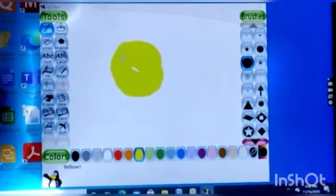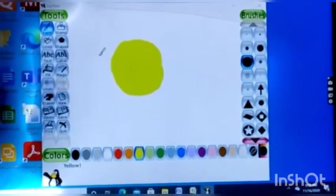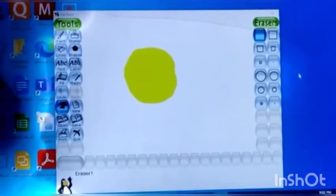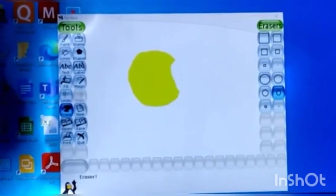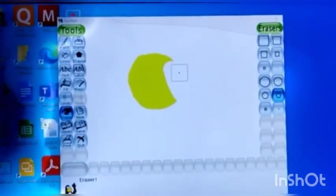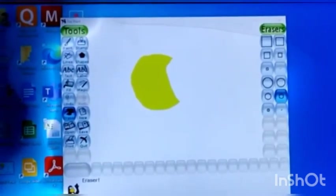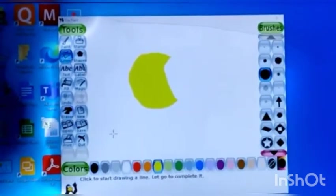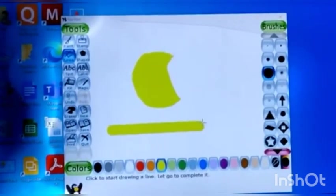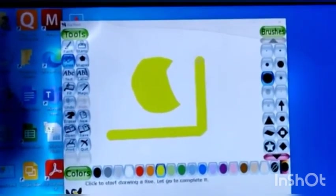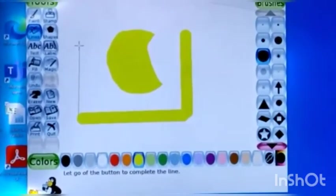The eraser tool helps in erasing any part of the drawing. If we have drawn something and want to erase or rub any part of it, we use eraser tool. The lines tool helps in drawing straight lines. Lines tool is used in drawing straight lines.